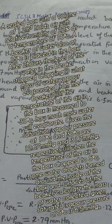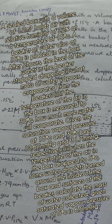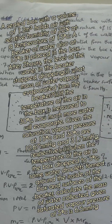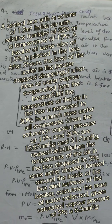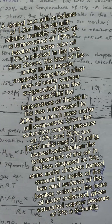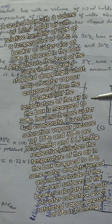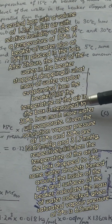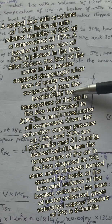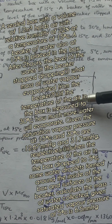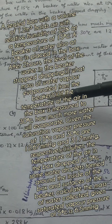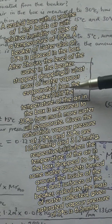We are given a sealed box with a volume of 1.2 cubic meters that holds air with a relative humidity of 22%. A beaker is placed inside this box and evaporation takes place until the water in the box no longer drops further.